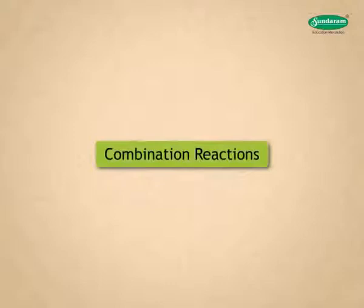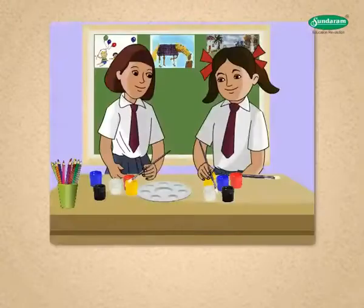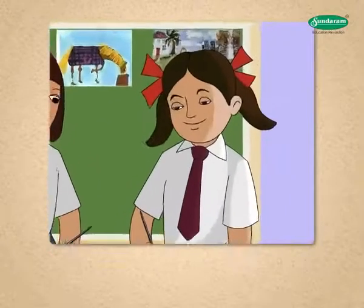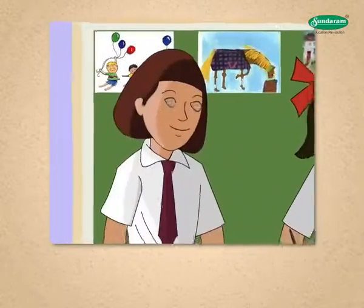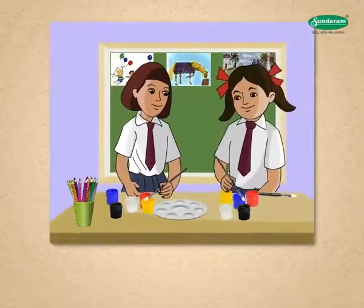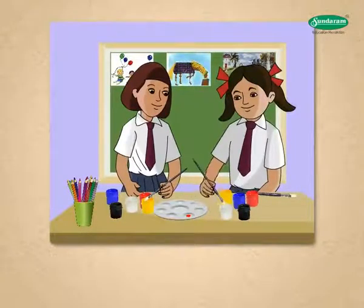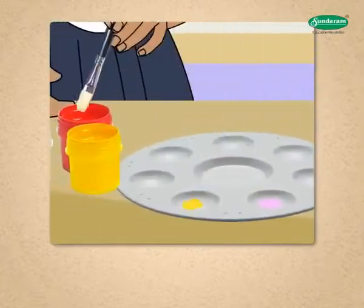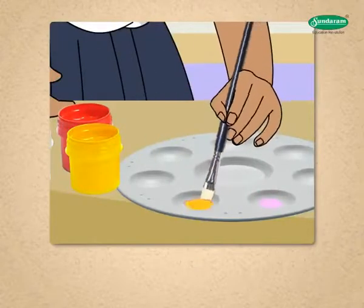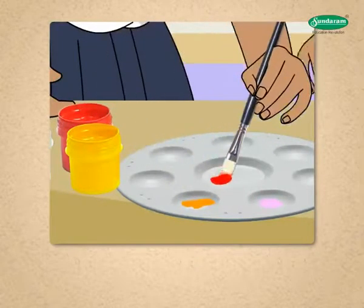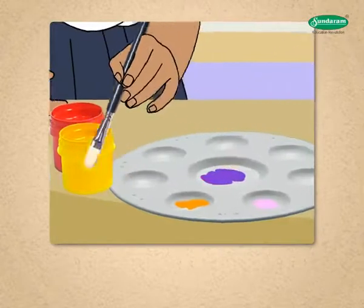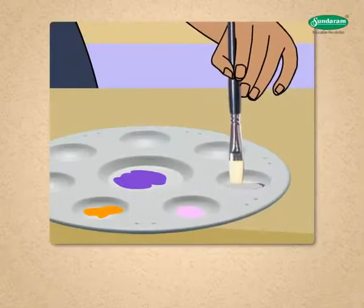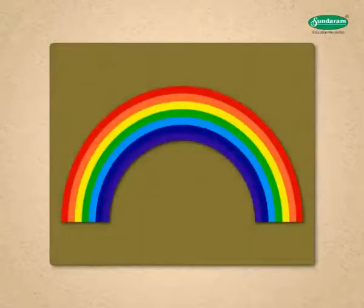Let us take a look at combination reaction. Rihanna and Reshma were having fun with colors in their drawing class. Rihanna mixed few drops of red color with white color and got pink color. Reshma mixed yellow with red color to get orange shade. They also prepared violet by mixing red and blue, and grey by mixing black and white colors. When you mix all your colors, what color do you get? We get a band of colors like the rainbow.